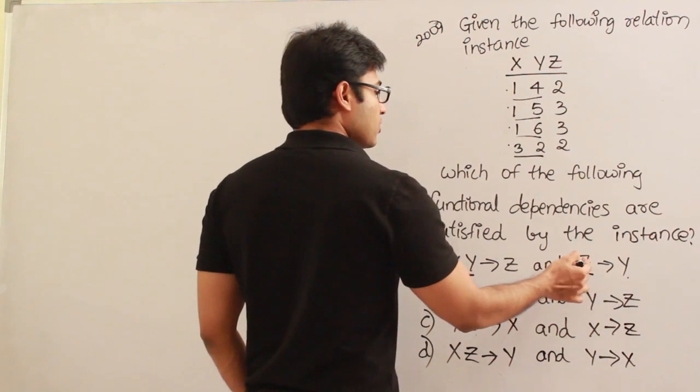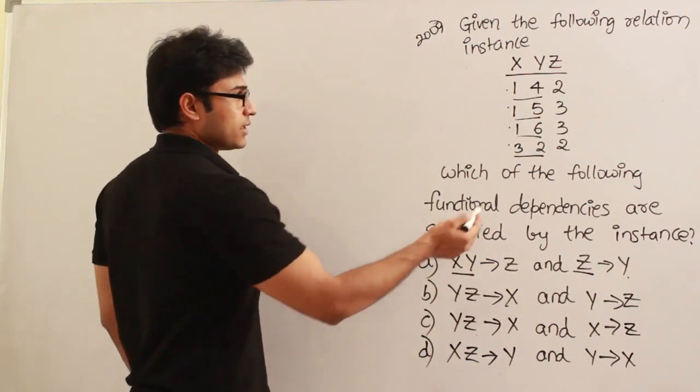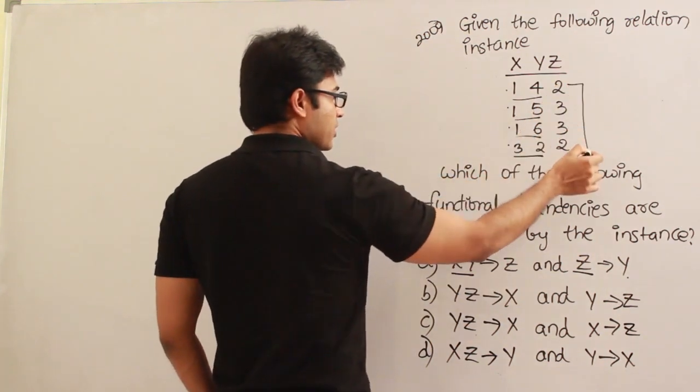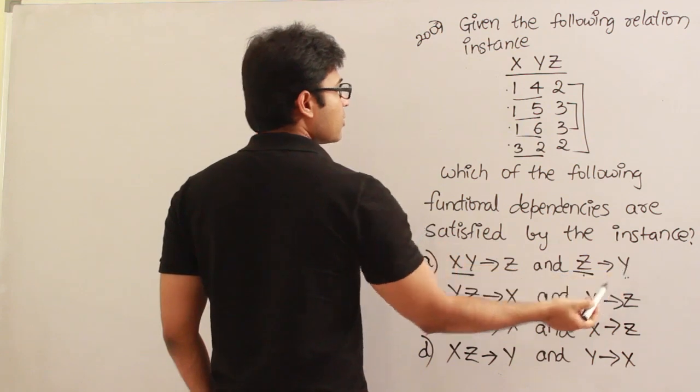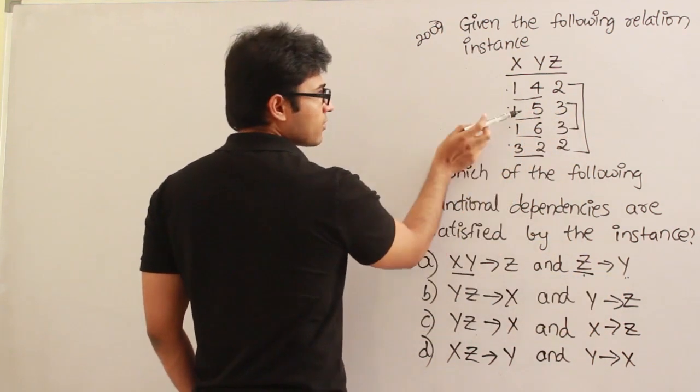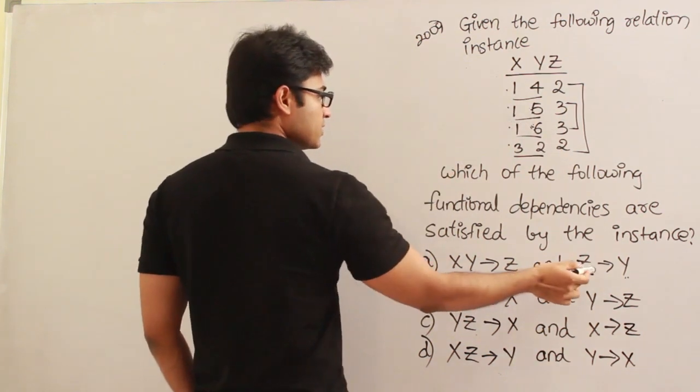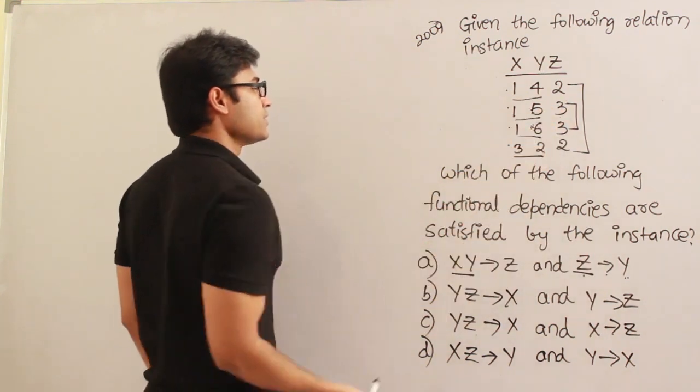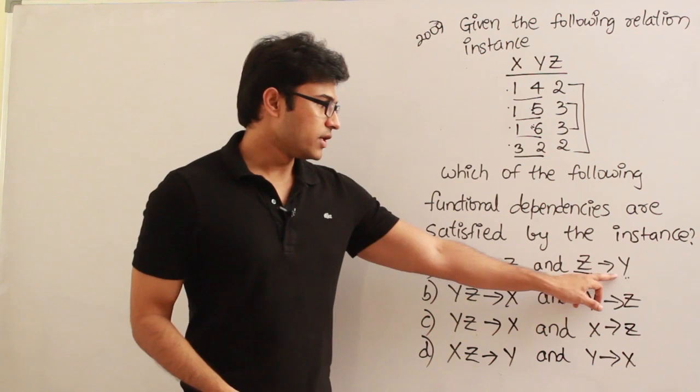And what about this Z derives Y? Now let's see if there is any repetition on Z. Yes, in Z there is repetition - these two are repeated and these two are repeated. For these two particular values, let's see the value of Y. So whenever Z is 3, Y is showing 5 and 6. Therefore this is enough to say that this doesn't hold true on this instance. Therefore this particular FD is not satisfied by this instance, so this is not the answer.